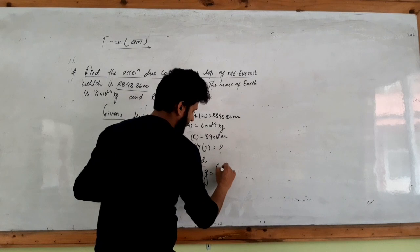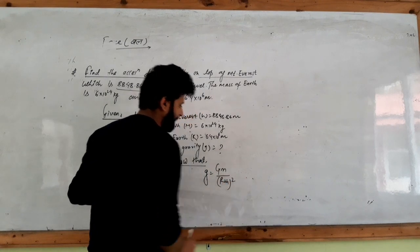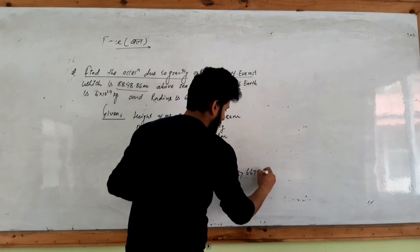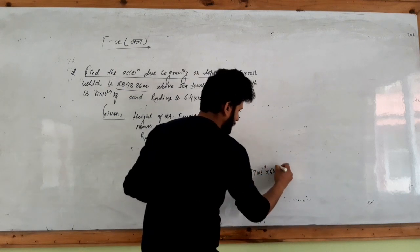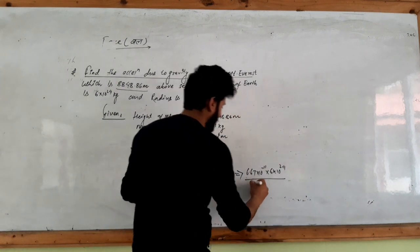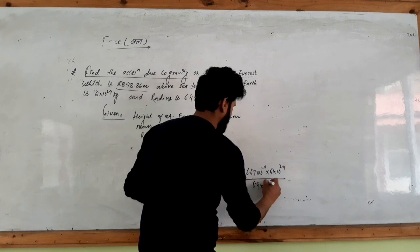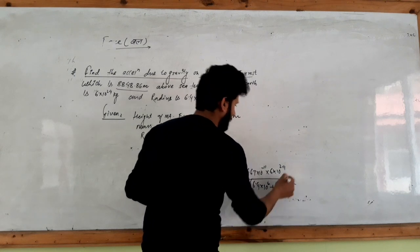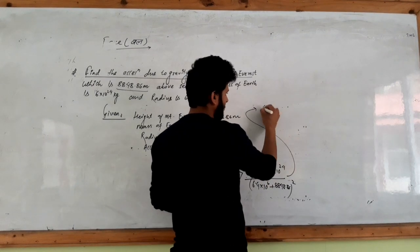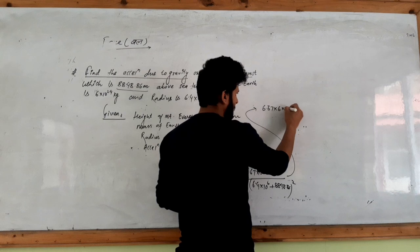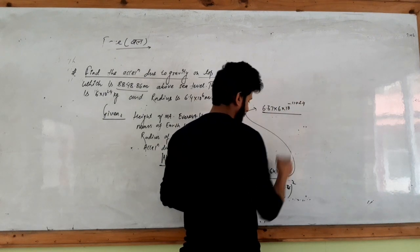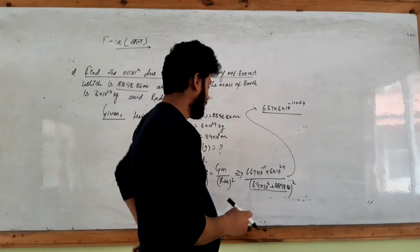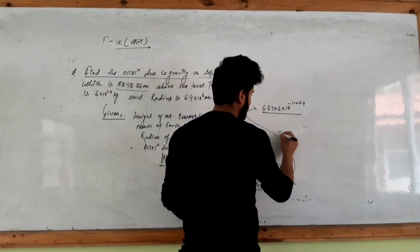The formula is g equals to GM upon (R plus h) squared. The value is 6.67 into 10 to the power minus 11 into 6 into 10 to the power 24 upon radius 6.4 into 10 to the power 6 plus 8848.6, all squared. So we get 6.67 into 6 into 10 to the power of minus 11 plus 24 over the denominator squared.